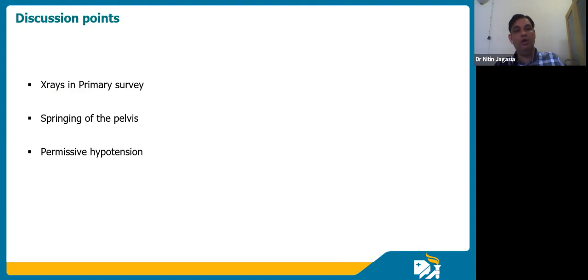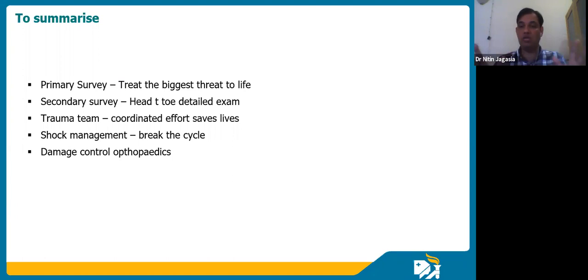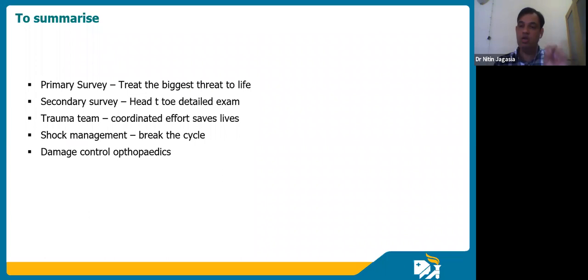In summary: primary survey treats the greatest threat to life, irrespective of specific diagnosis, using the ABCDE approach. Secondary survey is a detailed head-to-toe examination once the patient is stable. The trauma team works synchronously — like a pit stop — with clearly defined roles. Shock management requires breaking the vicious cycle of hypovolemia, hypothermia, acidosis, and coagulopathy through massive transfusion protocol, warming, and closing the bleeding source. Damage control orthopedics prioritizes hemorrhage control, ICU stabilization, and delayed definitive surgery for the unstable polytrauma patient. Thank you.